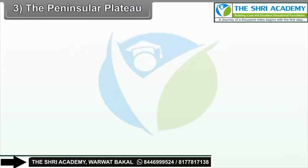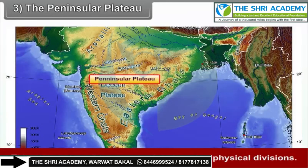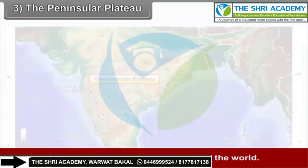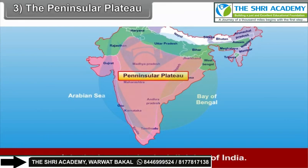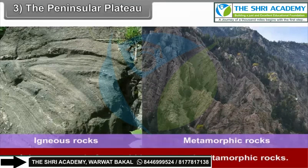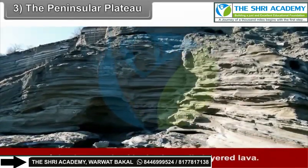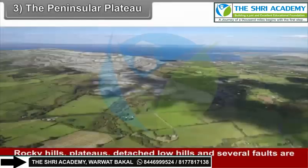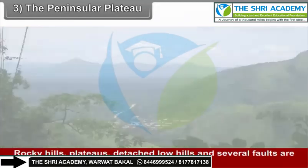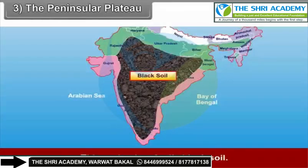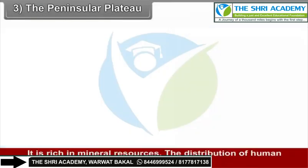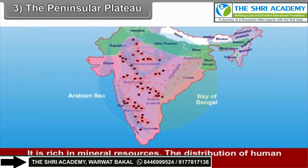The peninsular plateau is stable compared to other physical divisions. It is one of the oldest land masses in the world and the largest physical division of India, triangular in shape. It is composed of very old igneous and metamorphic rocks. Numerous landform features are associated with faulting and volcanic activities, characterized by horizontally layered lava. Rocky hills, plateaus, detached low hills, and several waterfalls are found here. This region has fertile black soil and is rich in mineral resources, though the distribution of human settlements is uneven.